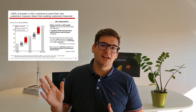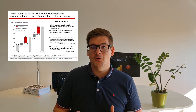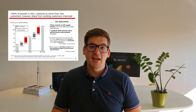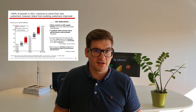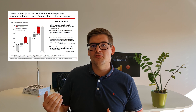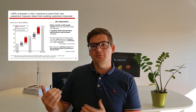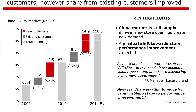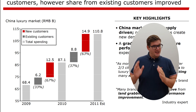Let's look at the Bain example from their video, which comes from the luxury market study of 2011. From the title, the main point is that there is forecasted growth in 2011 for the luxury market. The key arguments are that most spending will come from new customers, with a smaller part from existing customers. The bridge chart was a great choice here, as it clearly shows increases and decreases in spending for each group.